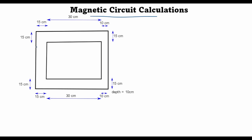The core we'll analyze is shown here. It has three of its limbs with the same area — 15 centimeters wide and 10 centimeters deep — while the fourth limb is somewhat thinner, with a width of 10 centimeters. We assume there are N = 200 turns of wire wrapped around one of the limbs, and a current I of 1 ampere is established in this wire.